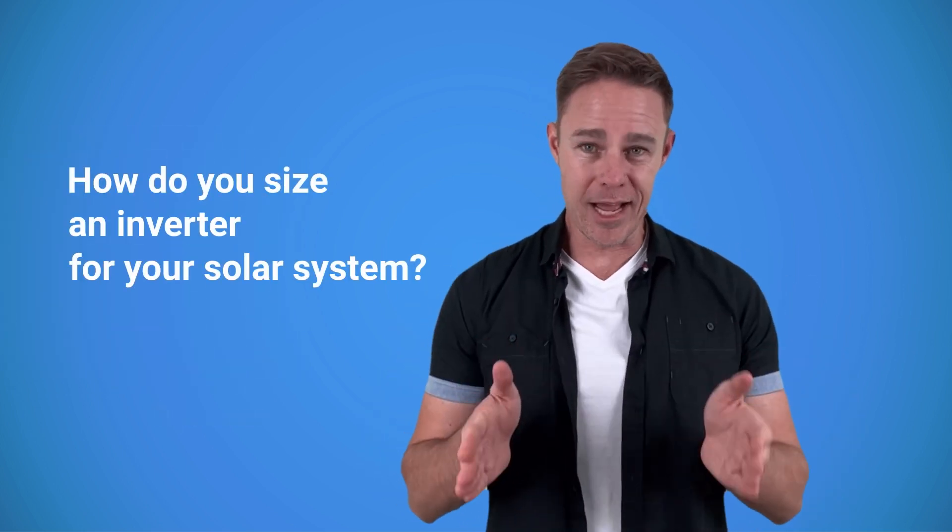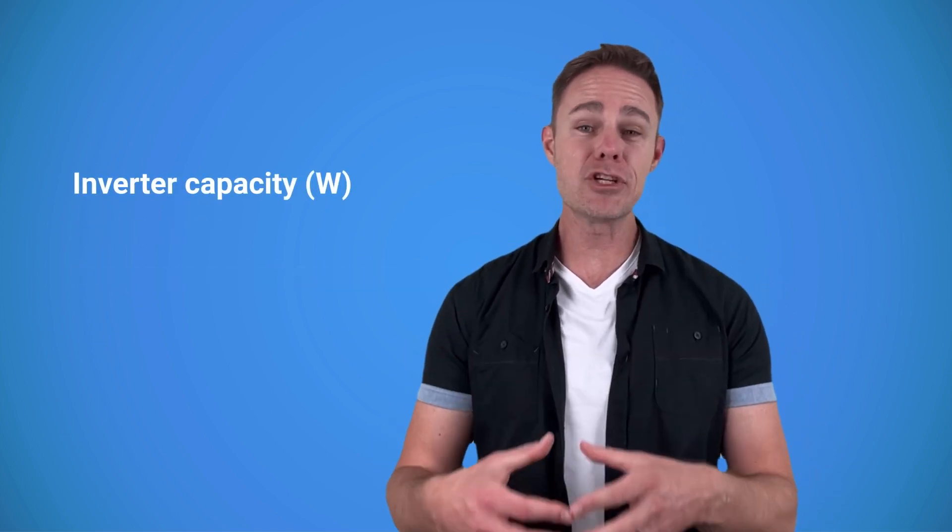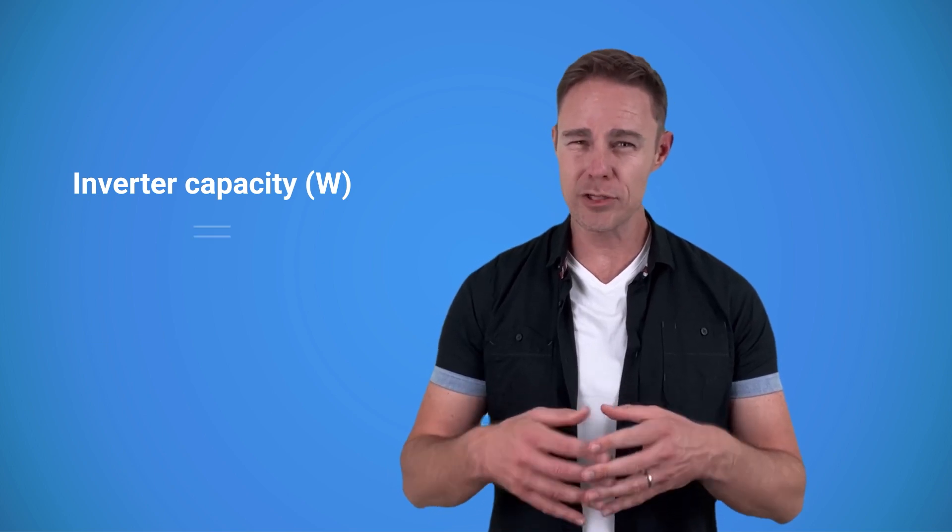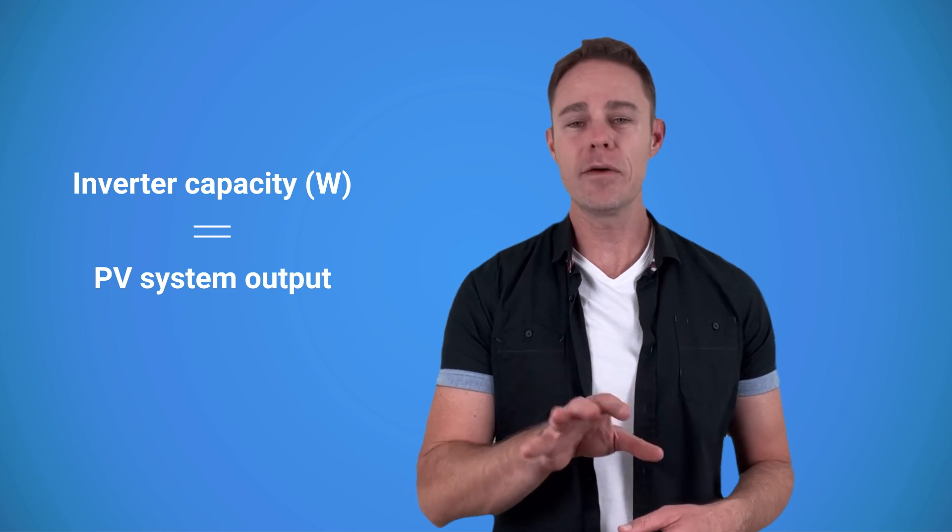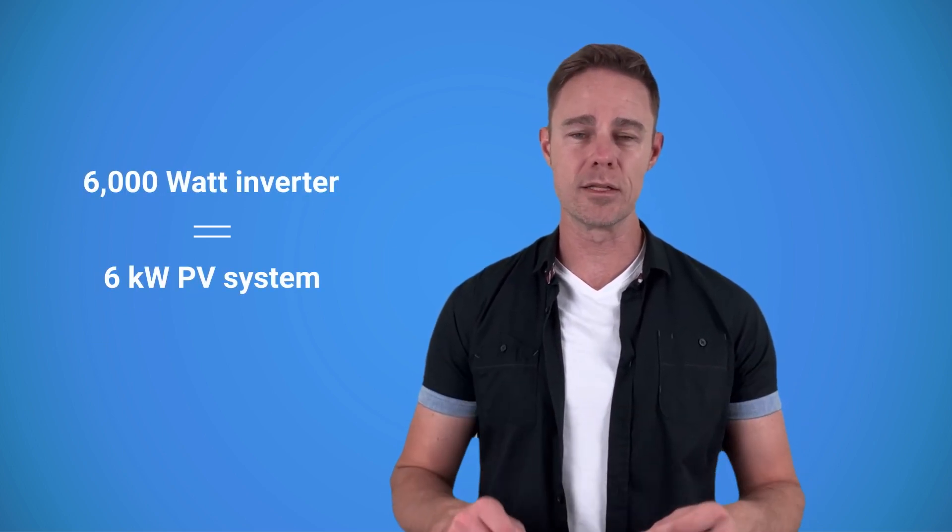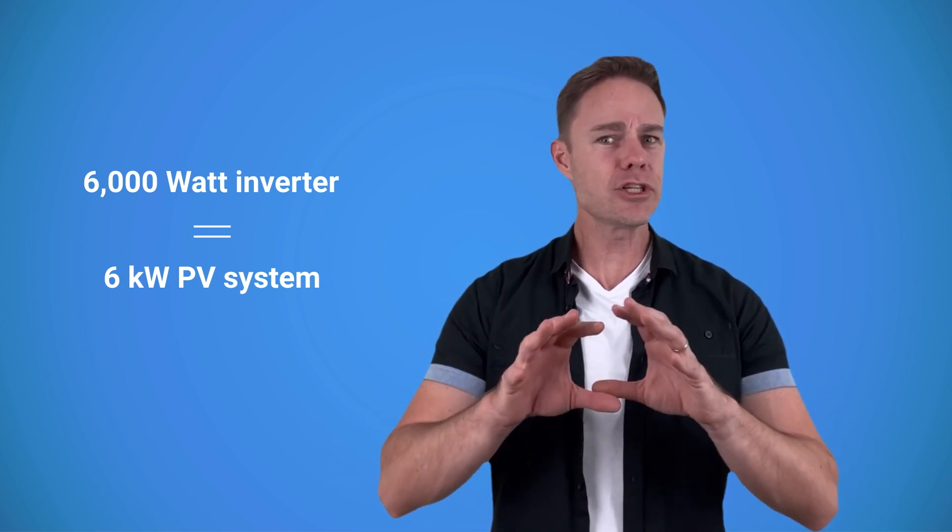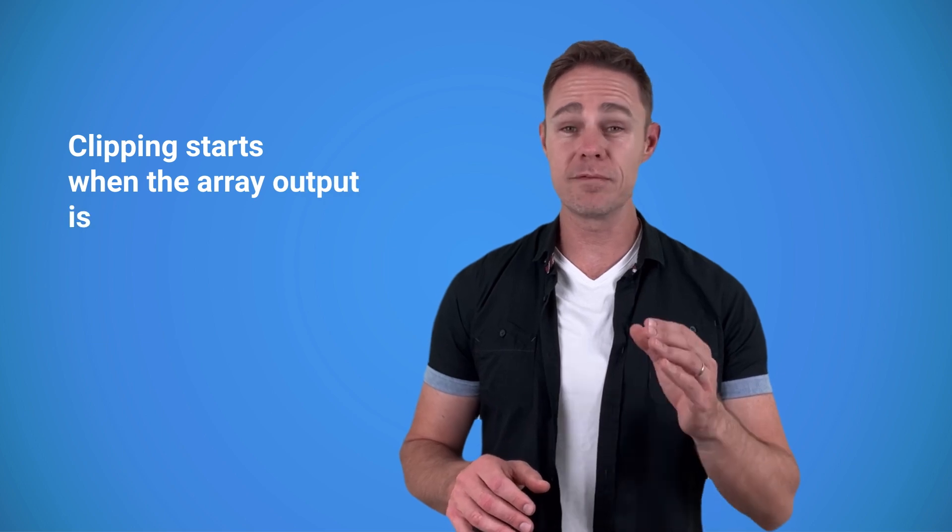So how do you size an inverter for your solar system? The capacity of an inverter is measured in watts and it should match the total power output of your system. For example, if you have a six kilowatt system, then the inverter should be rated for 6000 watts. The array can be bigger, but if there is just too much power from your panels for the inverter to handle, it can start limiting the amount of energy that it converts - this is called clipping.